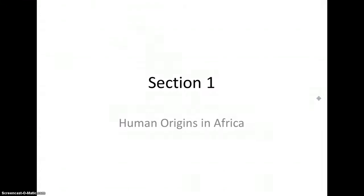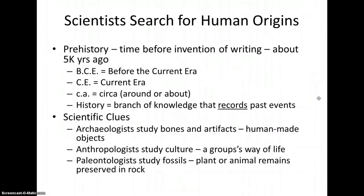Section 1: Human Origins in Africa. Fossil evidence shows that the earliest humans originated in Africa and spread across the globe. Prehistory is the time before the invention of writing, which took place about 5,000 years ago, or around 3000 BCE. BCE refers to before the current era, and we use BCE to remove religious influence from time. CE refers to the current era. CA is an abbreviation for circa, which is Latin for an approximation — around or about.